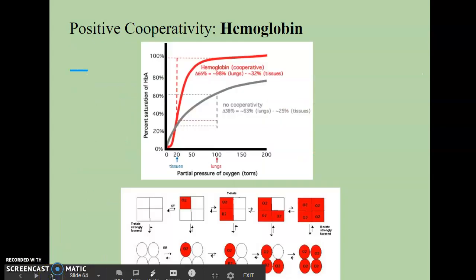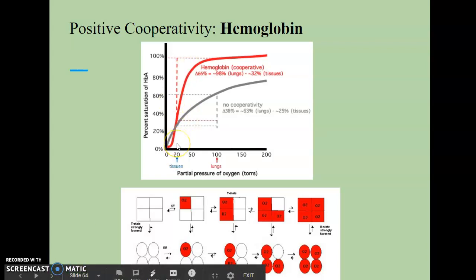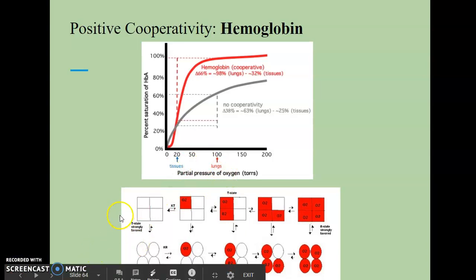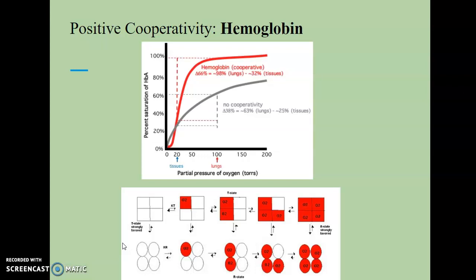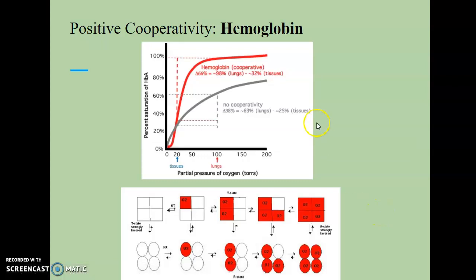There are some common diagrams showing the flip-flop between the T state and the R state, illustrating that once the first oxygen molecule is bound, the affinity for binding other oxygen molecules increases. The higher the oxygen concentration, the more cooperative the hemoglobin is, and therefore the more oxygen can be transported throughout the body.